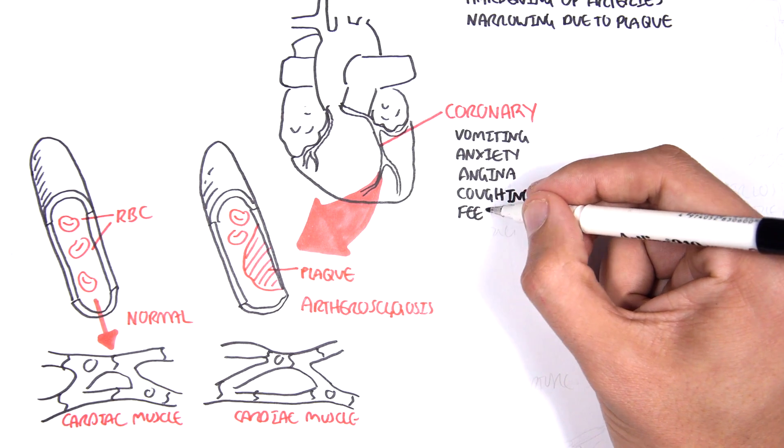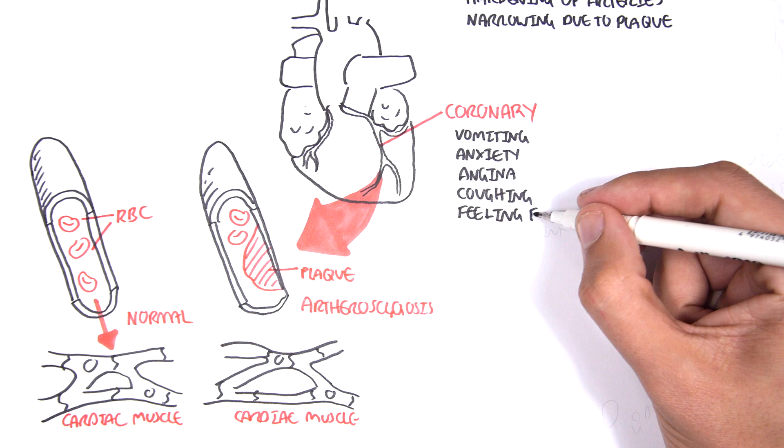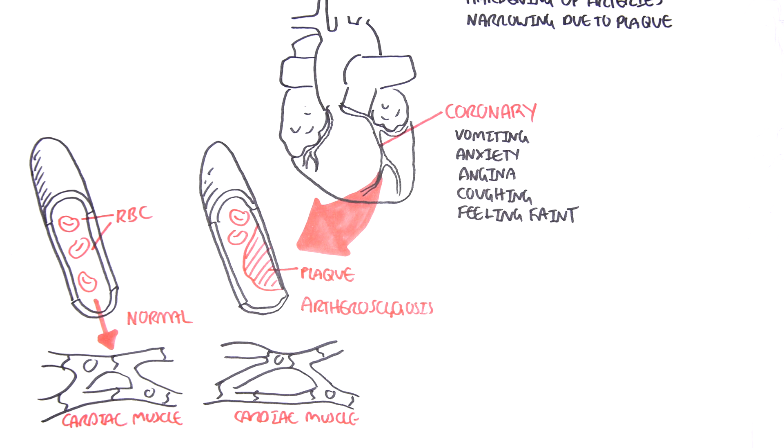So again, if the atherosclerosis in the coronary artery here is so severe, it can actually block everything. It can block the blood supply altogether. And we get ischemia of the cardiac muscle cells. And so as a consequence, these cells will die and you get a heart attack or heart failure.